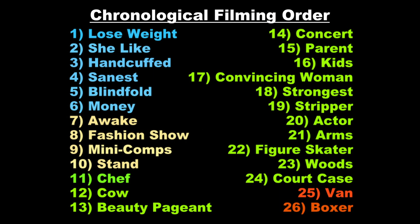Now, could I be mistaken on some of these? Sure. There are a couple of occasions where it was hard to tell which came first, so I had to make an educated guess and move on. Should Actor come before Stripper? It's possible. I feel as though I have a margin of error of two episodes or less. What I mean by that is, should Arms at 21 actually be 19, 20, 22, or 23? Possible. But should Arms at 21 actually be before Strongest at number 18, or after Court Case at number 24? No — not a chance.